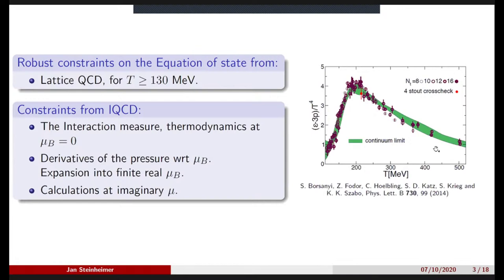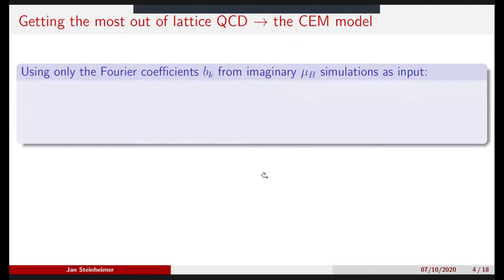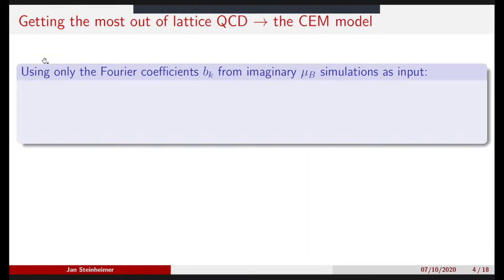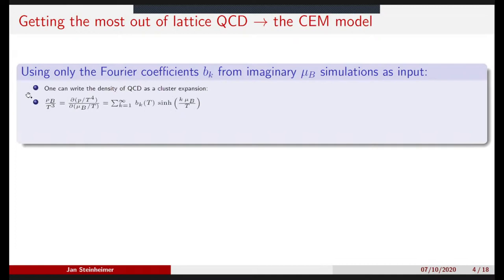We also have derivatives of the pressure with respect to the baryon chemical potential. That means we can do an expansion into the finite real chemical potential, but we also have calculations at imaginary chemical potential. We cannot solve lattice QCD explicitly for finite density — we can only do the expansion either in real or imaginary chemical potential. If we want to do an expansion in the imaginary chemical potential of QCD thermodynamics, we can use Fourier coefficients from some imaginary mu_b simulation as input. You can write the baryon density of QCD as a cluster expansion — a sum over functions with some coefficients as a function of mu_b over T.